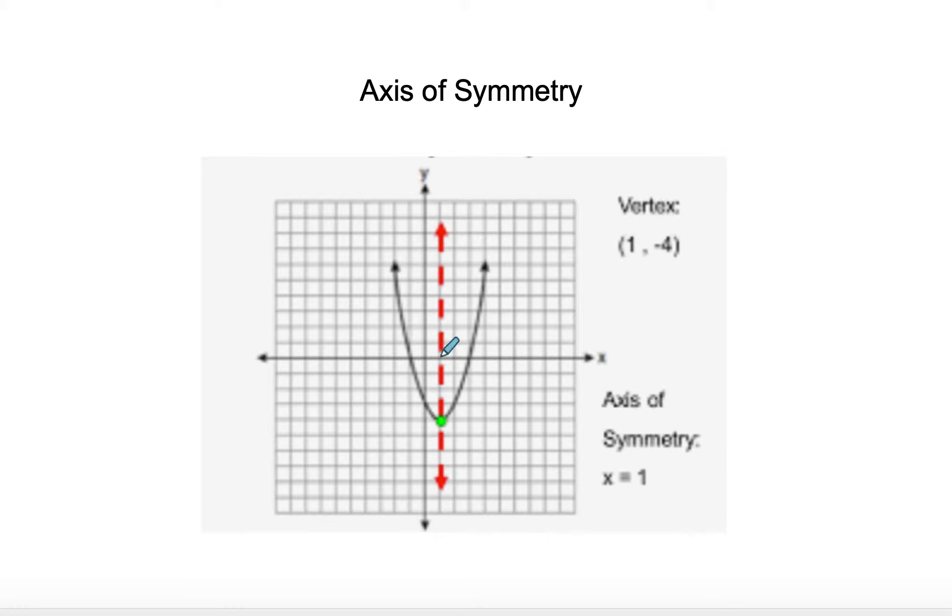On the axis of symmetry here, we have a negative 1 and a positive 3. So if I count 1, 2, 3, 4, in between, we get x equals 1. We can also do negative 1 plus 3 divided by 2. That gives me 2 divided by 2, so that also gives me x equals 1.